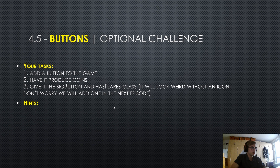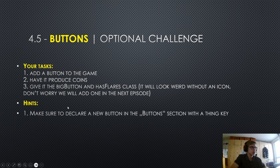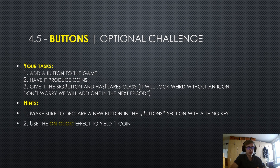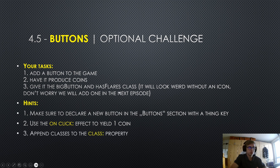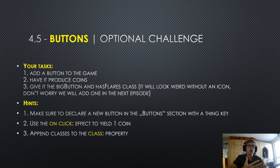Your first hint is to make sure to declare a new button in the button section with a thingy. Your second hint is to use the on-click effect to yield one coin, and your third hint is to append classes to the class property. Hopefully you have given that a go — let me know how it went in the comments. Now I will move on to actually completing this challenge and adding code to our game. Let's get into it.